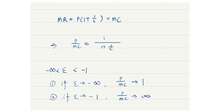As firms become more competitive, the price elasticity approaches negative infinity and the price becomes close to its marginal cost. On the other hand, when the demand becomes less elastic, the price becomes more and more higher than the marginal cost.